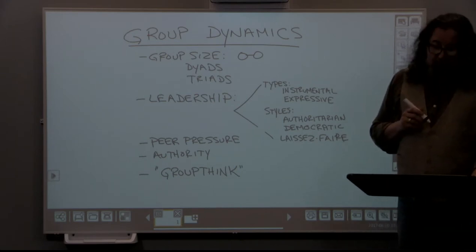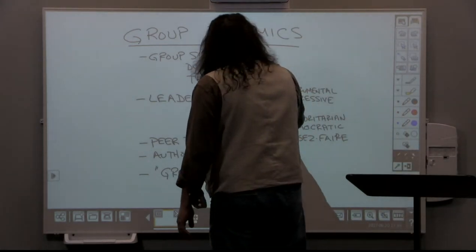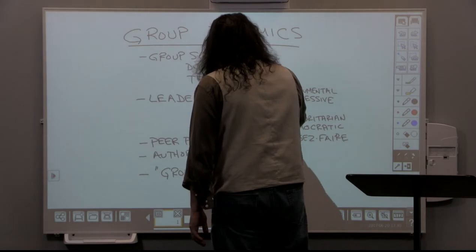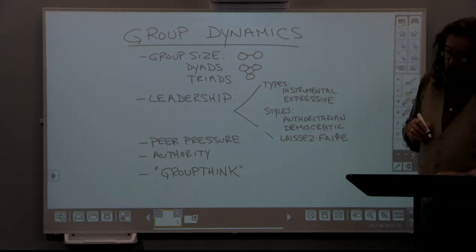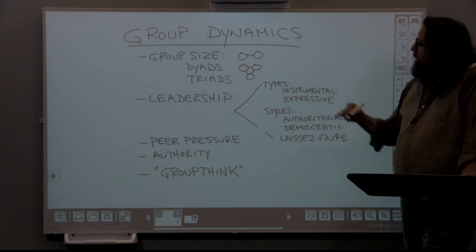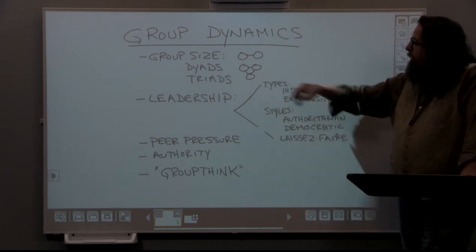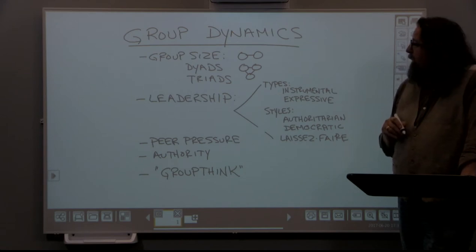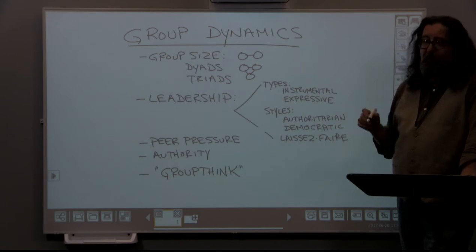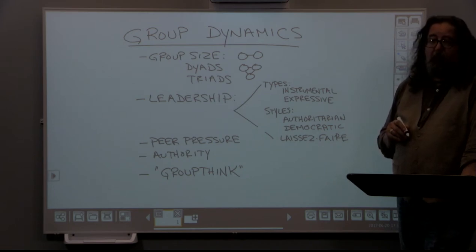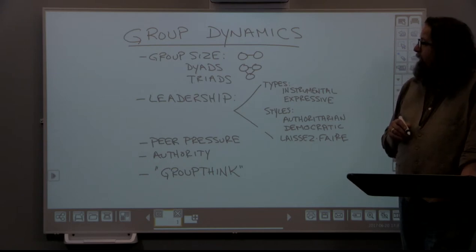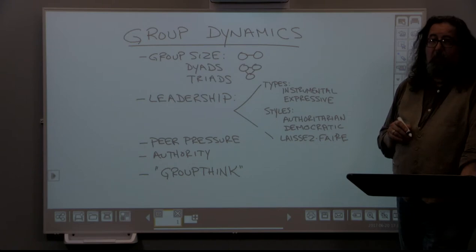The other characteristic we're going to say about a dyad is that it is also the most vulnerable to collapse. In other words, it's the most easily dissolved relationship that there is, because only one person out of the two needs to walk away. So one person can dissolve the relationship by simply not participating in it. The dyad is a very intense relationship but also very vulnerable to collapse.